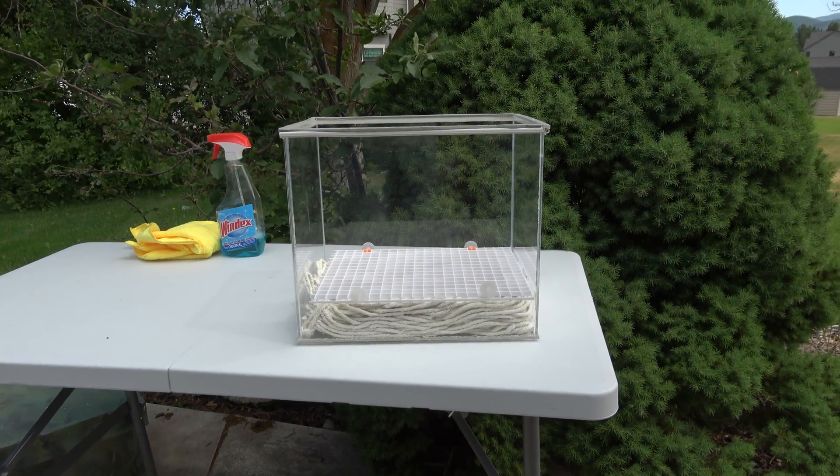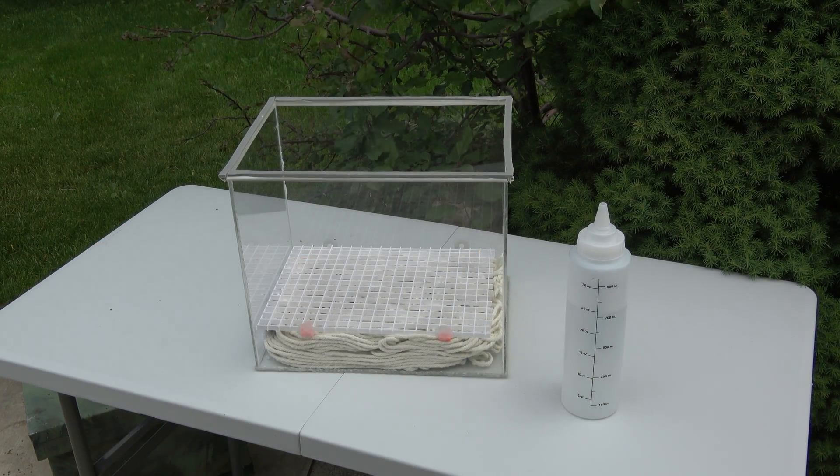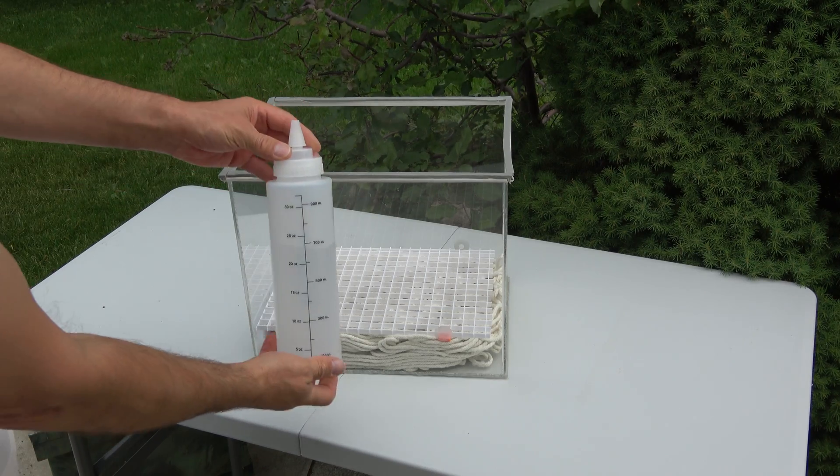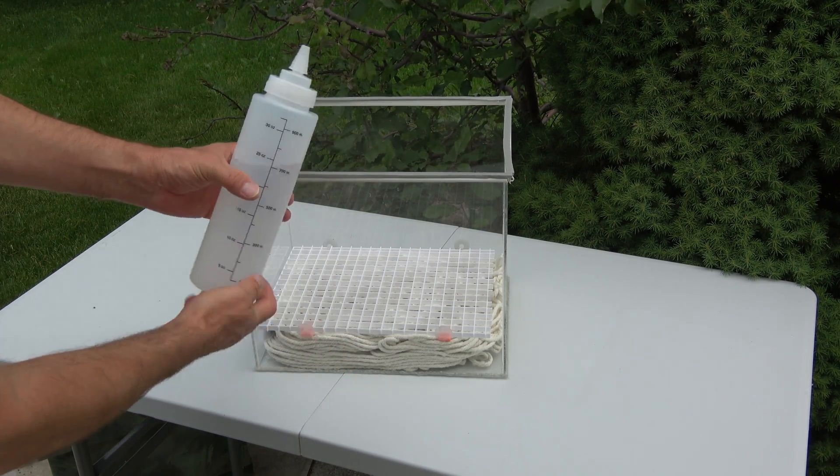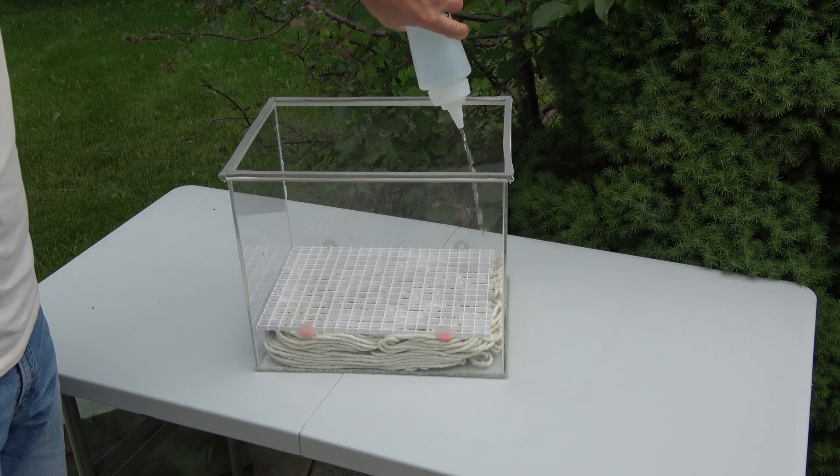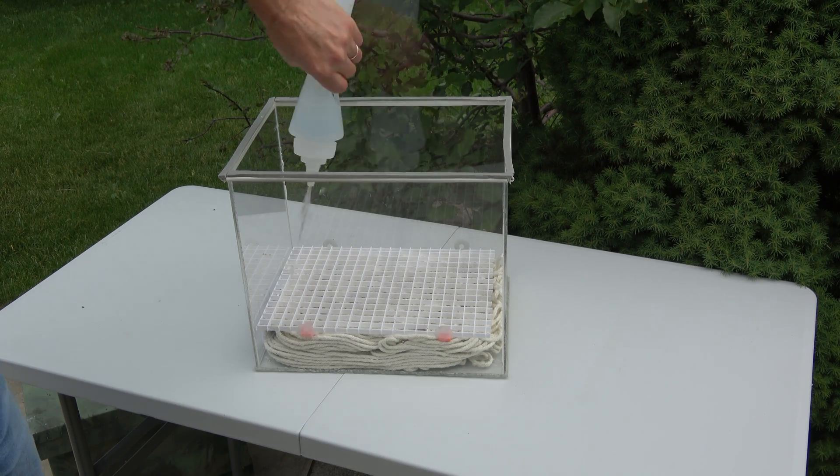This mop pad holds the alcohol vapor, which is the secret ingredient for creating particle trails. We used 99% isopropyl alcohol, also from the hardware store. It's normally used for cleaning and disinfecting. We soaked the mop with about 700 milliliters, and it absorbed the alcohol really well.